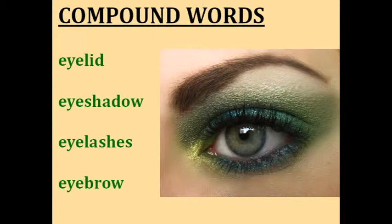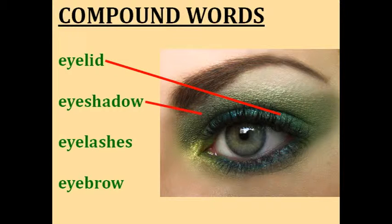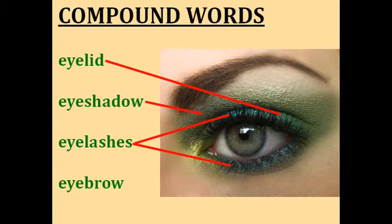Now I'm going to teach you four words related to your eyes. Your eyelid is the small fold of skin that covers your eyes when you close them. Women like to decorate their eyelids with a type of makeup called eyeshadow — in the picture, she's wearing green eyeshadow. These tiny hairs on your eyelids, on the top and bottom, are called your eyelashes. And the line of hairs above your eye is your eyebrow. So four compound words with eye: eyelid, eyeshadow, eyelash, and eyebrow.